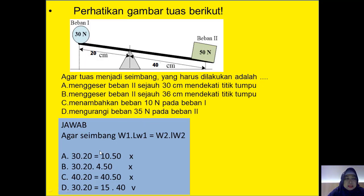Yang A: menggeser beban 2 sejauh 30 cm mendekati titik tumpuh, suruh maju. Awalnya 40, maju 30, jadi LW2 tinggal 10. Masukkan: W1 kali LW1 = 30 kali 20 = 600. W2 kali LW2 = 50 kali 10 = 500. Tidak sama, salah. Yang B: menggeser beban 2 sejauh 36 cm mendekati titik tumpuh, jadi LW2 = 4. Apakah 30 kali 20 sama dengan 50 kali 4? 600 tidak sama dengan 200. Tidak sama, salah.